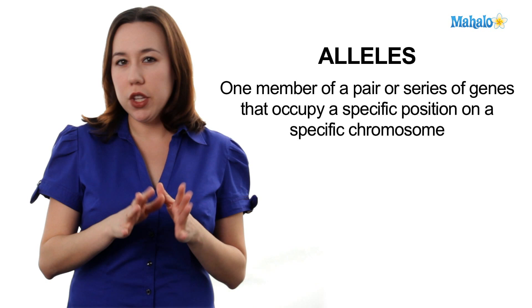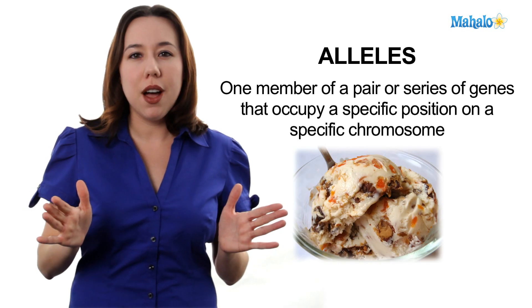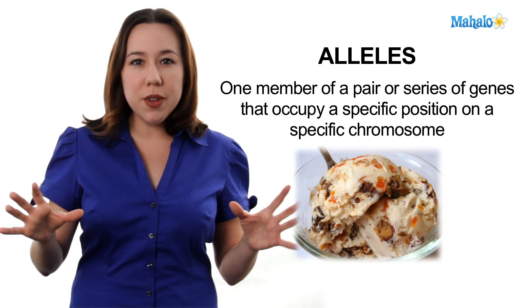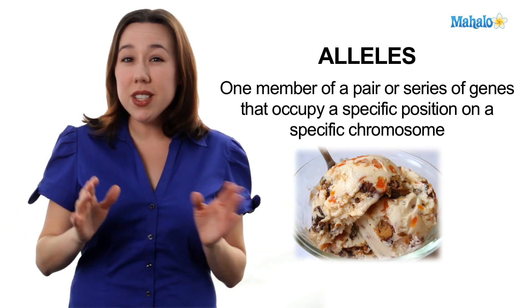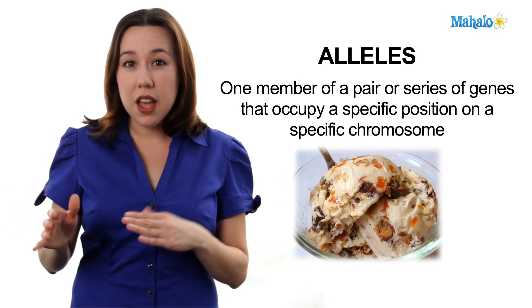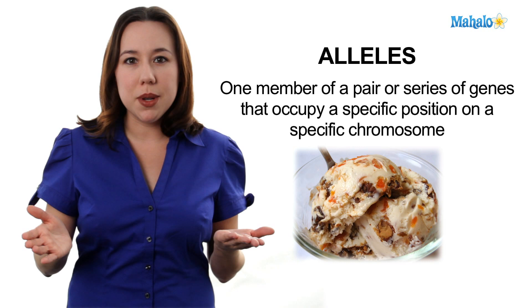So, you go into the ice cream shop, there's 31 flavors of ice cream. Even though they're all different flavors, they're all still ice cream, right? Alleles are going to be those different flavors of genes that you have available to you.